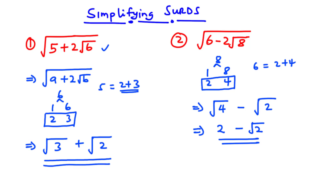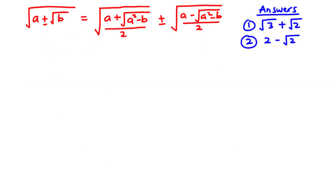This is a simple trick that can help you simplify expressions of this nature, and you can use it in your examination. Now let's look at how we can use the formula. If we have something like a plus or minus the square root of b all under a bigger square root, that equals the square root of (a plus the square root of a squared minus b) over 2, plus or minus the square root of (a minus the square root of a squared minus b) over 2. The operation sign carries through.